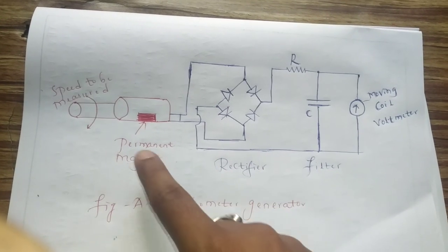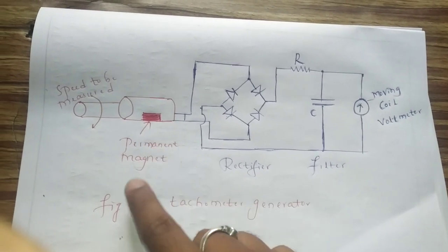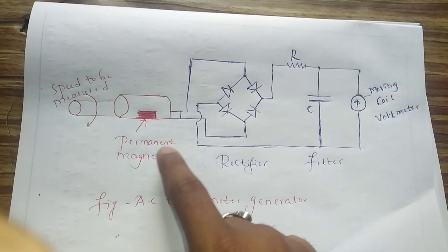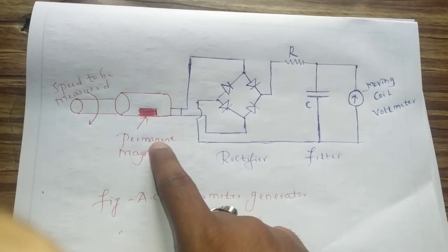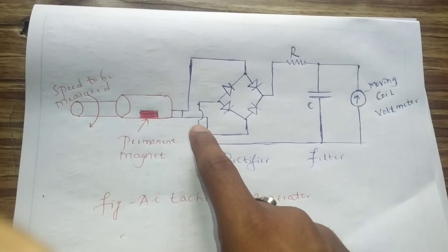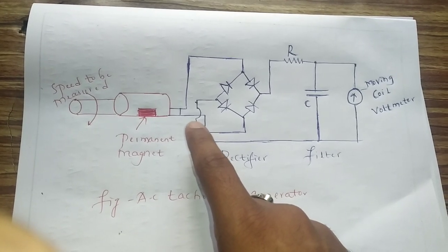The rotating magnet is either a permanent magnet or electromagnet. As the coil is wound on the stator, the problems associated with the commutator are absent.